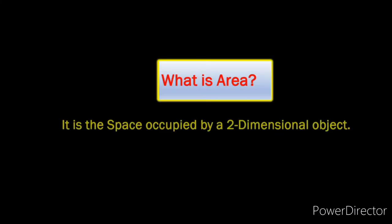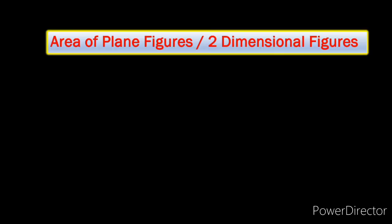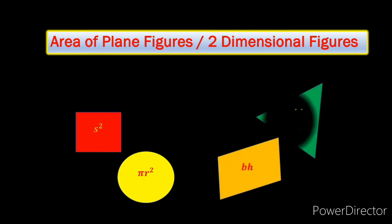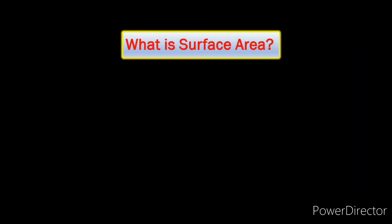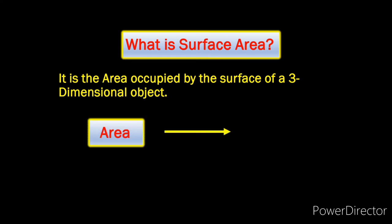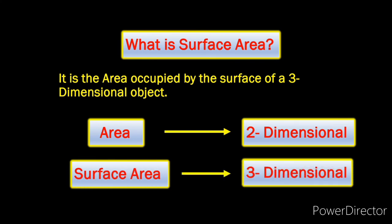Now we already know what is area — it is nothing but the space occupied by any two-dimensional object. For different two-dimensional objects like circle, parallelogram, square, etc., there is only one type of area that we have learned. Surface area is nothing but the area that is occupied by the surface of any three-dimensional object. So while area is the term used for two-dimensional objects, surface area is the term that we use for all three-dimensional objects.